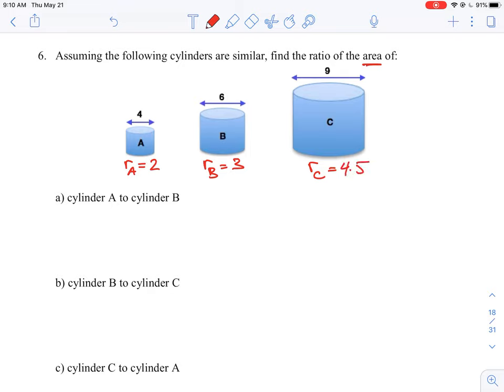So how could we do the ratio of the area, and remember it's area, of cylinder A to cylinder B? So again, if we go back to our idea of what is the relationship between radius and area?